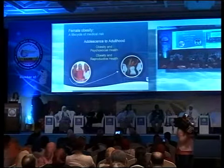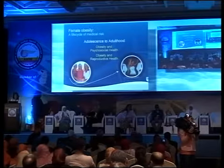Obesity affects women disproportionately. The female obesity life cycle spans medical risk during infancy, childhood, puberty, middle age, and post-menopausal periods. In adolescence and adulthood there are psychosocial health problems and reproductive complications including infertility and failure of assisted reproduction. One study showed that the pregnancy rate with assisted reproduction was halved for obese women, and BMI predicts infertility both with and without polycystic ovary syndrome.